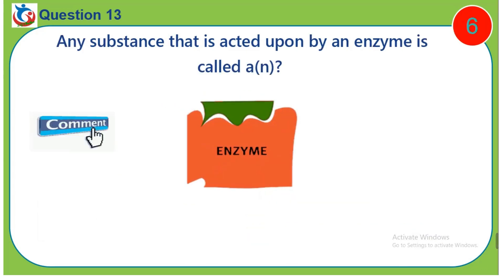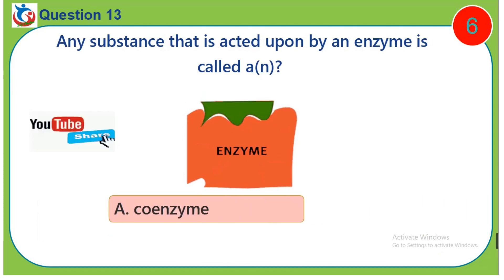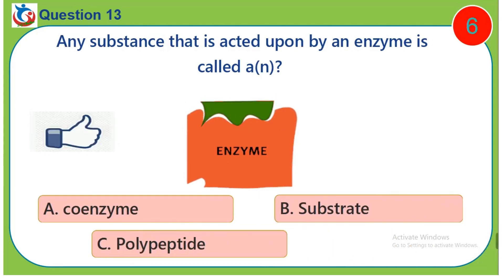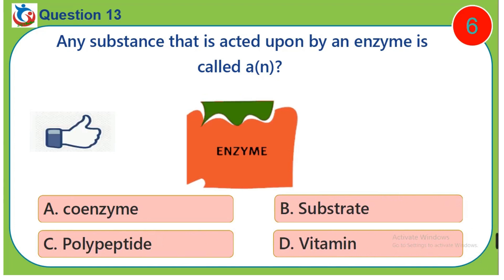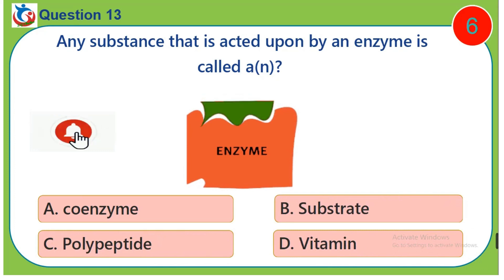Question 13. Any substance that is acted upon by an enzyme is called dash. A. Coenzyme. B. Substrate. C. Polypeptide. D. Vitamin.